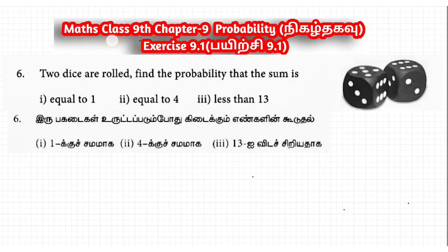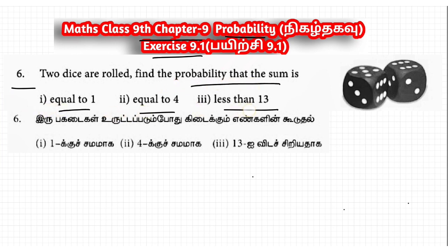Hi students, this is Class 9 Math Chapter 9 Probability, Exercise 9.1 Question Number 6. Two dice are rolled. Find the probability that the sum is equal to 1, equal to 4, and less than 13.